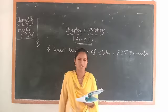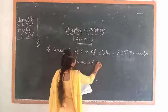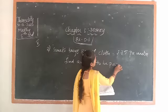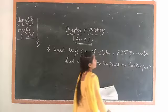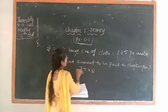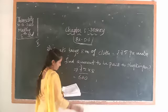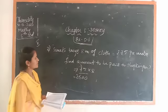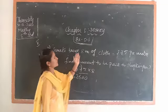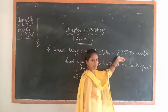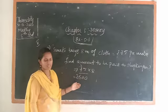What is the amount to be paid to the shopkeeper? We have to multiply 75 into 8. We will get the value. If we multiply, we get 600. The amount to be paid to the shopkeeper is rupee 600. They give us: Swati buys 8 metres of cloth at rupee 75 per metre. Multiply 75 into 8, we will get 600.